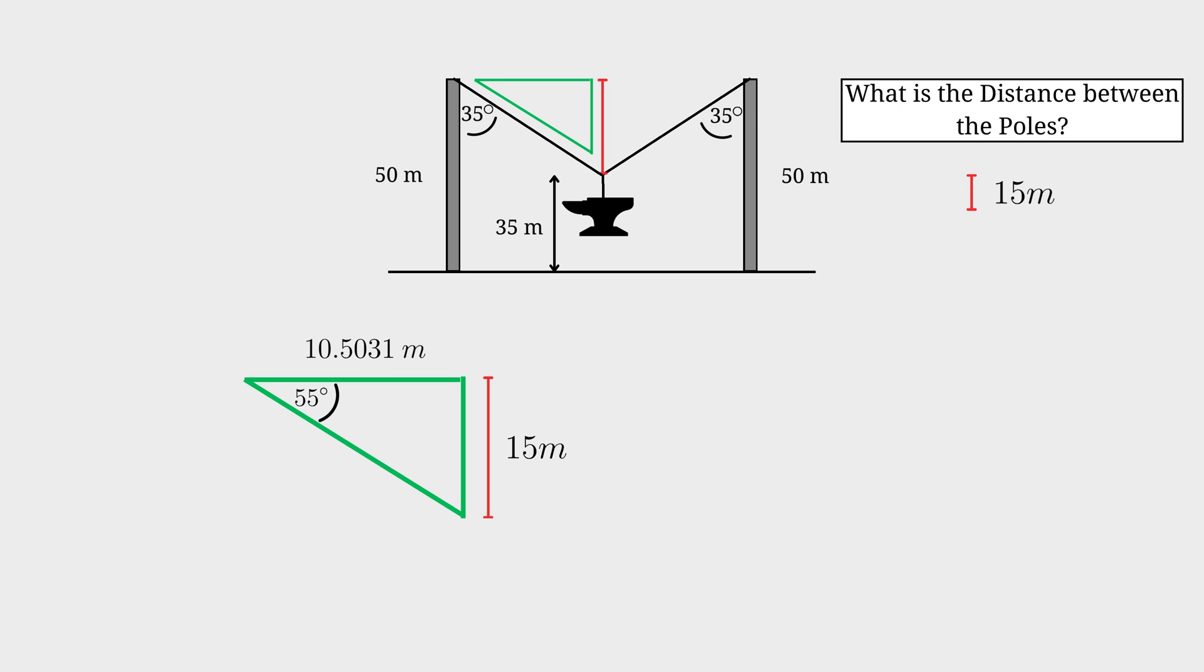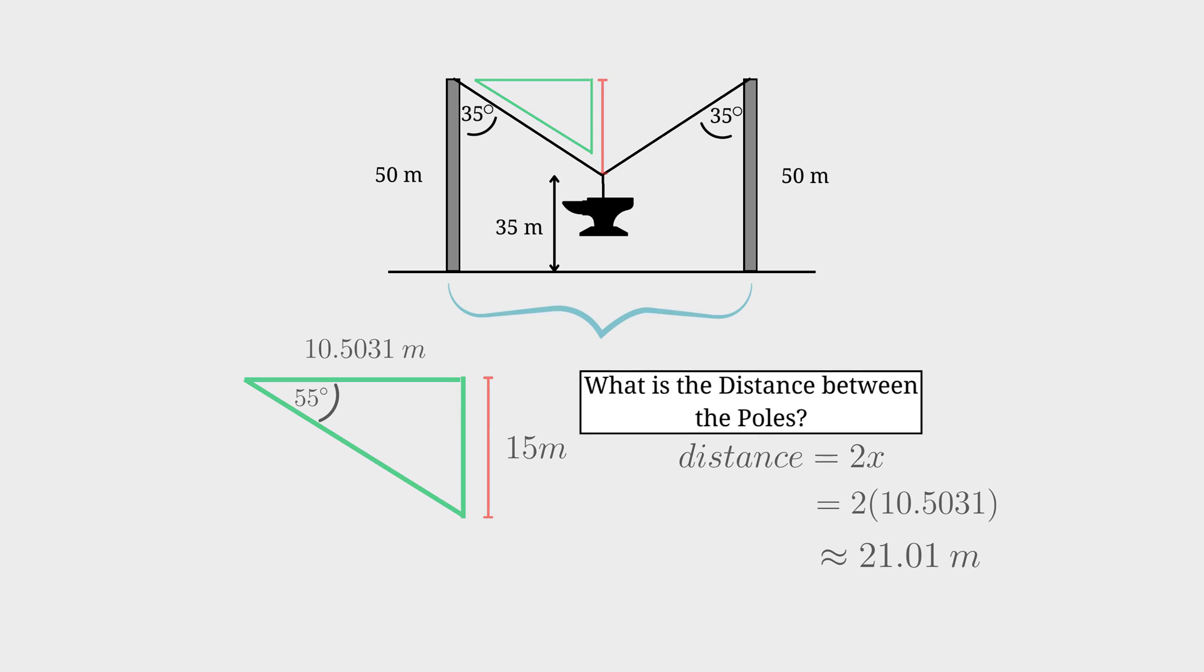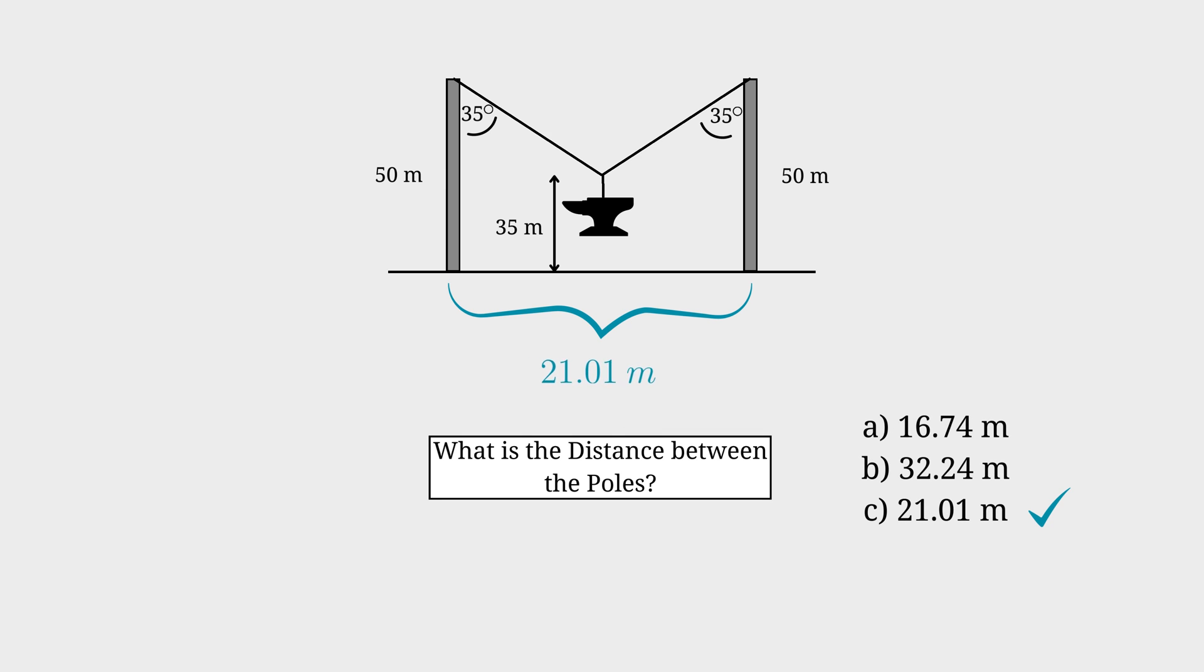We go back to the question. What is the distance between the two poles? That will simply be 2 times this side length. So 2x. 2 times 10.5031 is 21.01, rounded off to 2 decimals. And there you have your distance. So if you guessed C, you are correct.